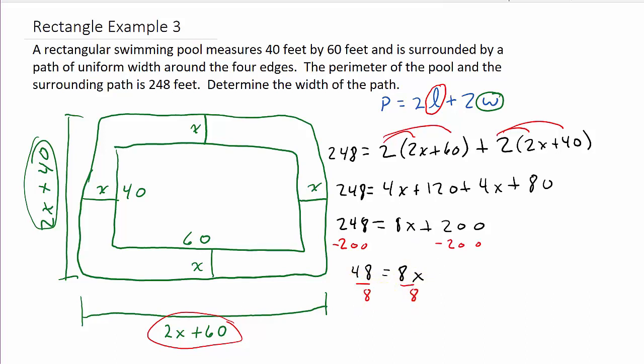So now I get x equals 6. X equals 6 feet. And that's what they wanted to know: the width of the path is 6 feet.